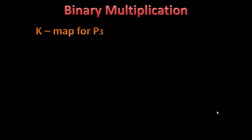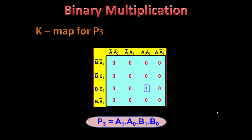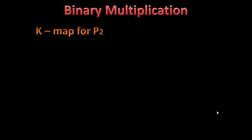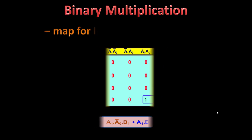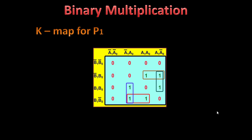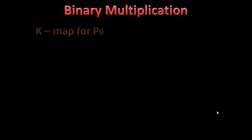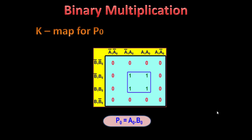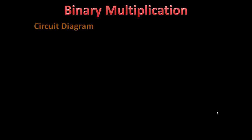Now to implement this, we need 4 K-maps, each for one output bit. For p3, we get a single term: p3 = a1·a0·b1·b0. For p2, the K-map has two pairs giving its equation. For p1, there are four pairs giving a more complex equation. And for p0, we have a quad resulting in a very simple equation: p0 = a0·b0. Using all these four equations, we can derive the final circuit diagram.